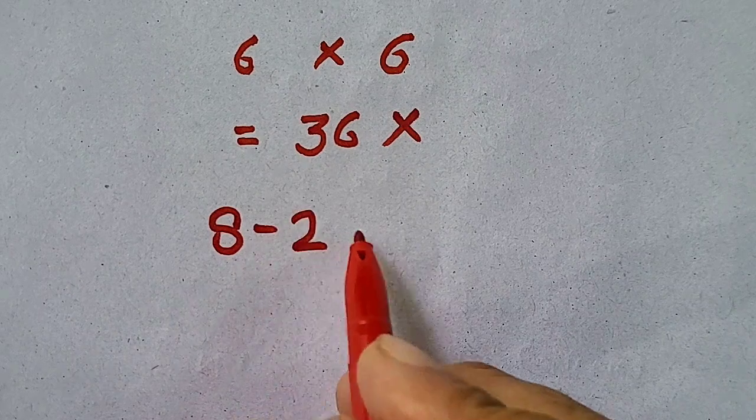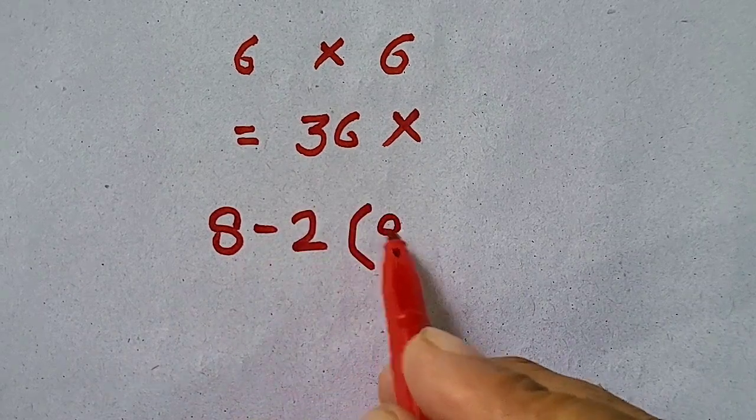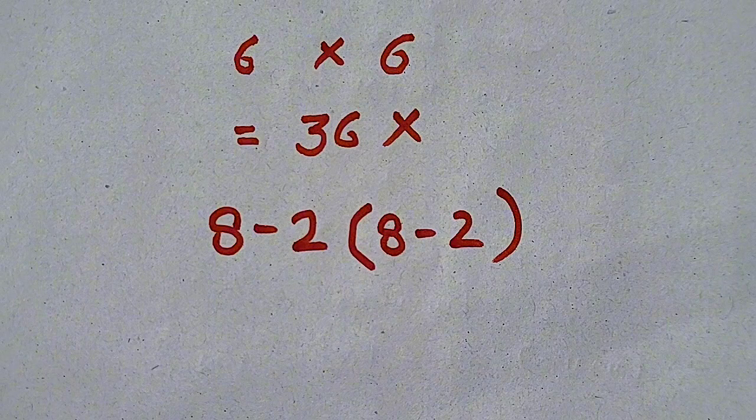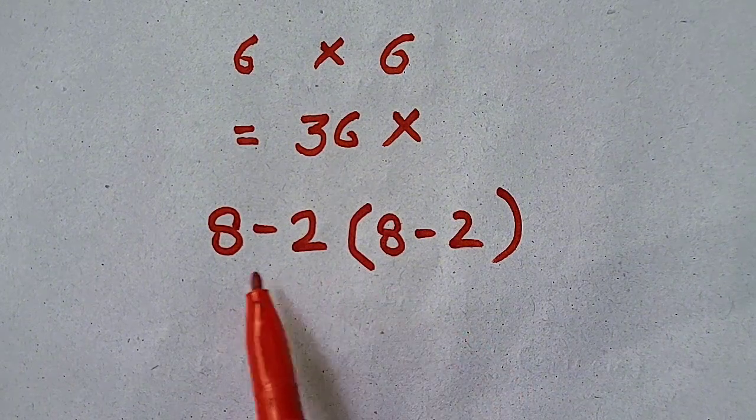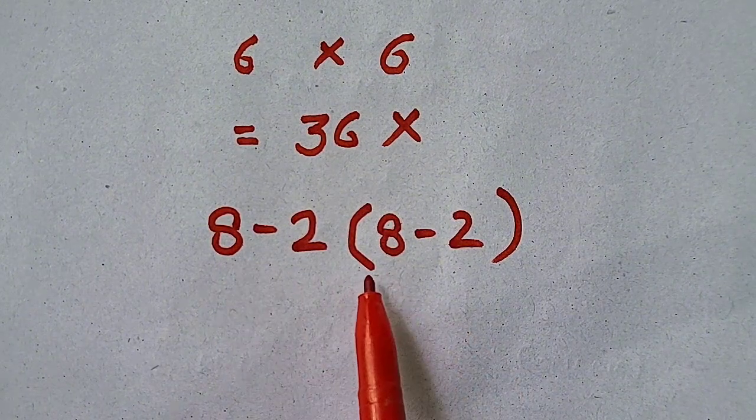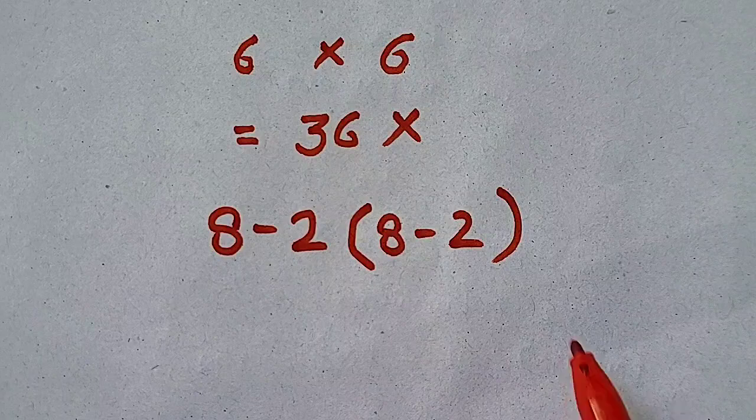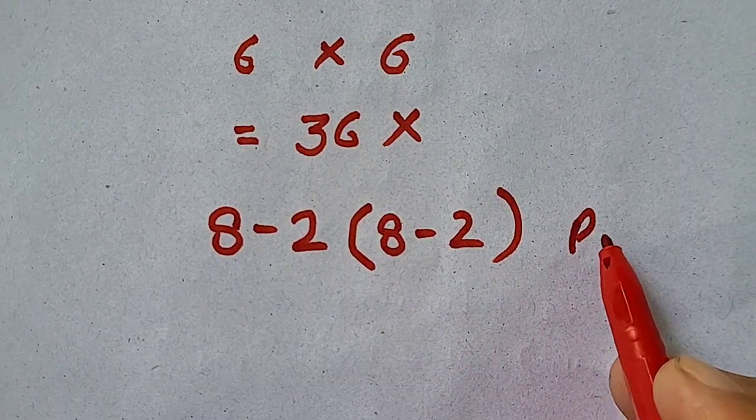It is 8 minus 2 times 8 minus 2. Here you have noted that one parenthesis is involved. And according to PEMDAS rule,